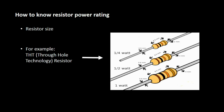How can we know the resistor power rating? You can identify the power rating by the size of the resistor. We have different types of resistors and each type has a different size. For example, in through-hole technology resistors: a quarter-watt resistor has a length of 6.1 millimeters, a half-watt resistor has 9.5 millimeters, and a 1-watt resistor also has different dimensions. For precise power rating, you should refer to the resistor datasheet.